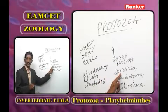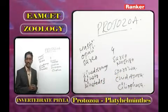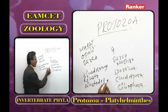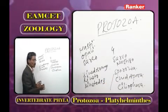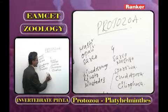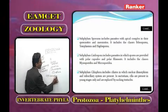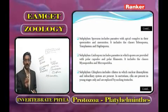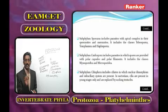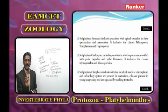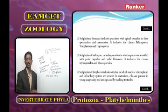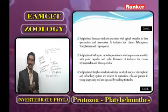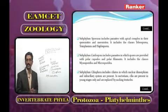The second subphylum is Sporozoa. The important character of Sporozoa is the presence of epicomplexa — with the help of epicomplexa, sporozoan parasites penetrate into the host body. Sporozoa is also called Apicomplexa. In Sporozoa, all are parasites.